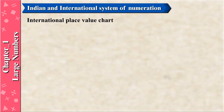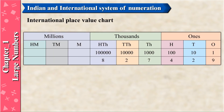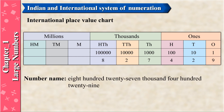International place value chart: Millions period — HM (Hundred Millions), TM (Ten Millions), M (Millions); Thousands period — HTH, TTH, TH; Ones period — H (Hundreds) = 100, value 4; T (Tens) = 10, value 2; O (Ones), value 9. Digits placed: 8, 2, 7 in thousands; 4, 2, 9 in ones. The number is 827,429.